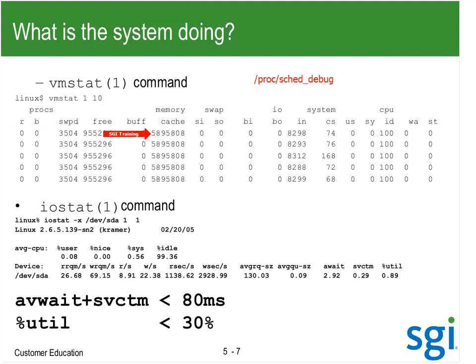Then I've got swap ins, swap outs, then my IO — blocks read in, blocks written out, and interrupt handler. This is actually an Itanium sample because it looks like an eight-CPU system getting 1,024 clock interrupts per second. Nowadays you're going to get 250 clock interrupts per second per CPU.